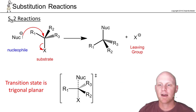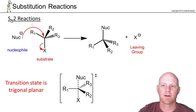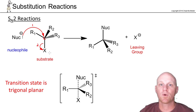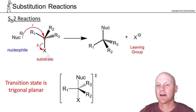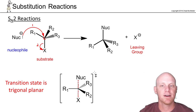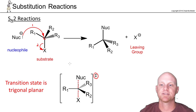Looking at the SN2 transition state: the nucleophile attaches to the electrophilic carbon while the leaving group departs — one bond forming, one breaking simultaneously. In the transition state, both bonds are partial bonds represented as dashed lines, and we enclose the transition state in brackets with a double-dagger symbol.